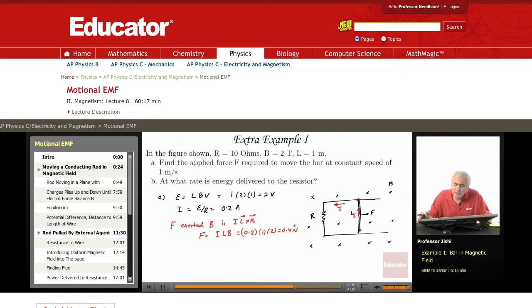Now what is the direction of the magnetic force? It's L cross B. L is along the current and B is into the page, so you rotate your fingers into the page and the thumb points to the left. So the magnetic force F_B is to the left and it's equal to 0.4 Newtons.